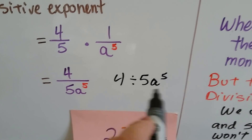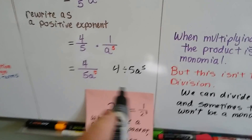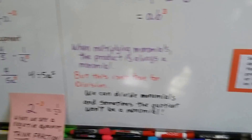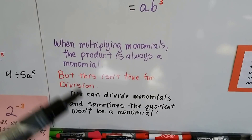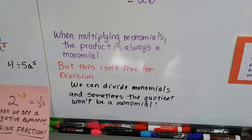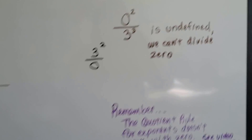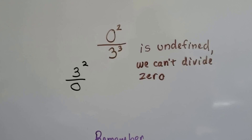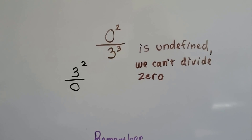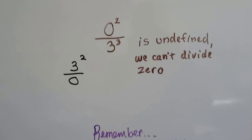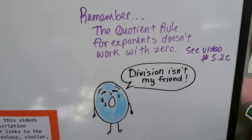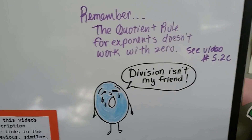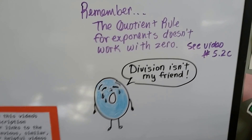4 divided by 5a to the fifth power is not a monomial — it's a binomial. The 4 would be a constant and that would be a term. So in division, it sometimes does not give you a monomial. But in multiplication, when you multiply two monomials, you'll get a monomial. Also remember that zero is not included — when you divide by zero, it's undefined. You can't divide three by zero, so the quotient rule for exponents doesn't work with zero. There'll be a link to video 5.2c that talks about this more. Division is not zero's friend.